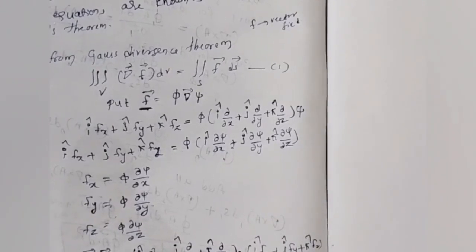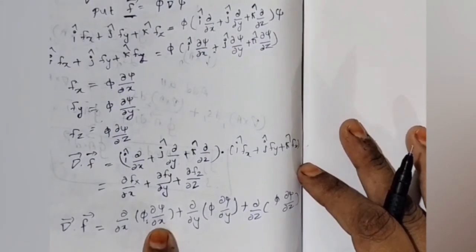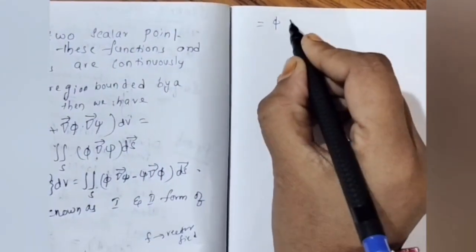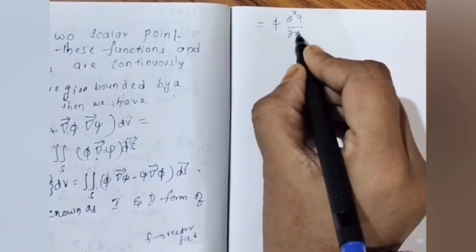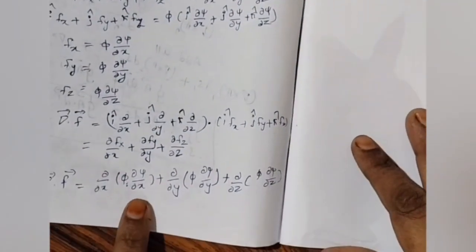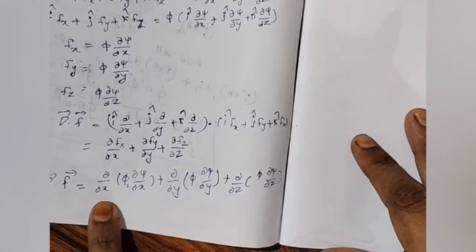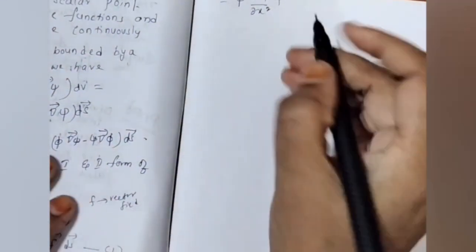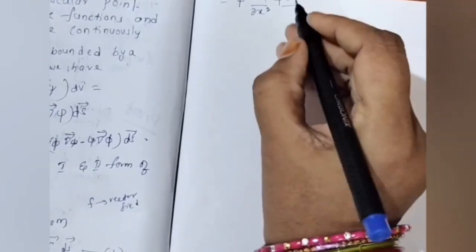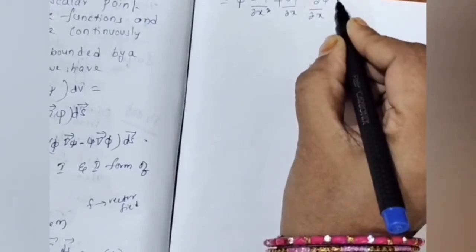For the x-component, keep π constant: we get ∂²ψ/∂x². Then keep ∂ψ/∂x constant, we get ∂π/∂x. So the x-component gives π ∂²ψ/∂x² + (∂ψ/∂x)(∂π/∂x).